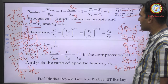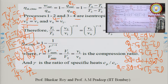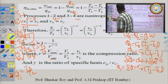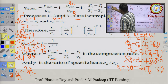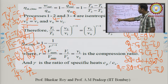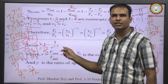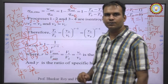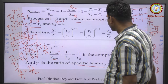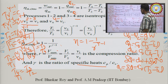After cancellation, the efficiency simplifies to η = 1 − T₁/T₂ = 1 − 1/r^(γ−1), where γ = C_p/C_v is the ratio of specific heats, C_p is the specific heat at constant pressure, and C_v is the specific heat at constant volume. The final expression for the Otto cycle efficiency is η = 1 − 1/r^(γ−1).